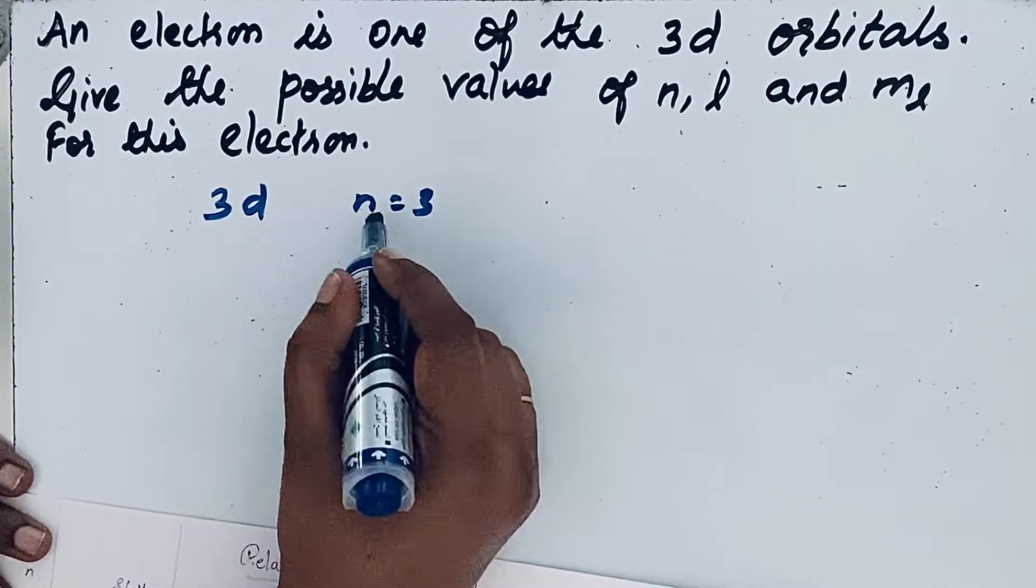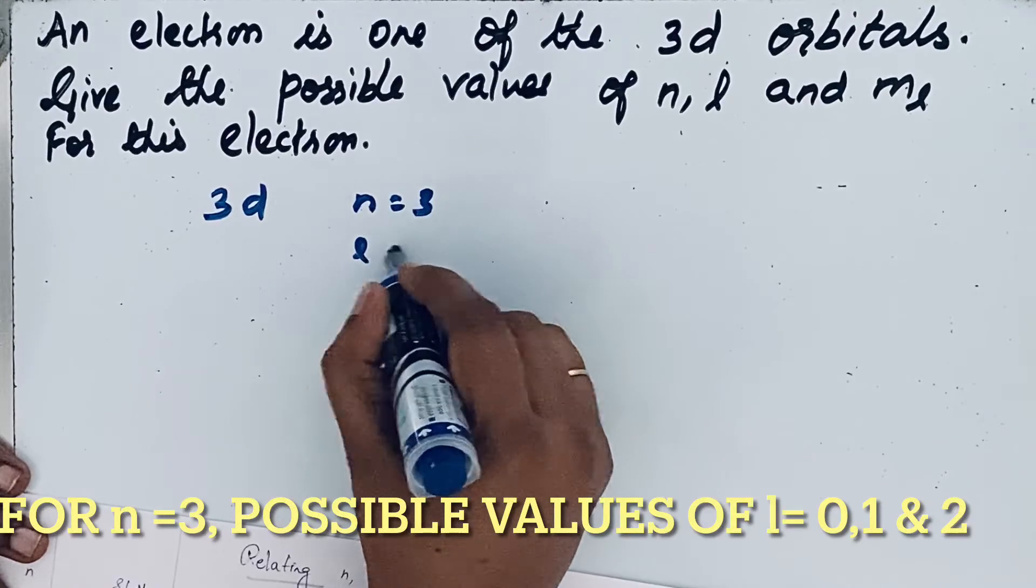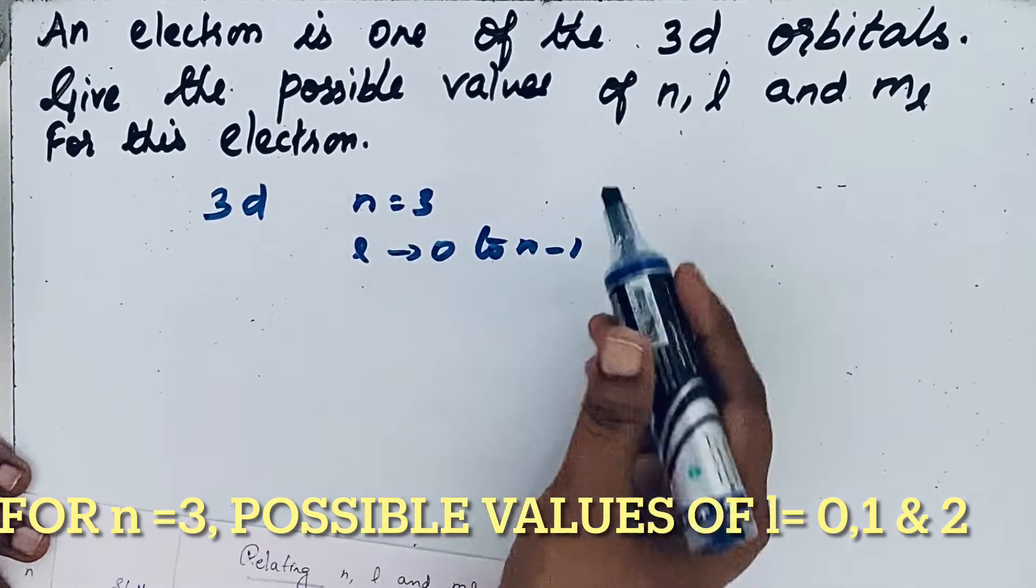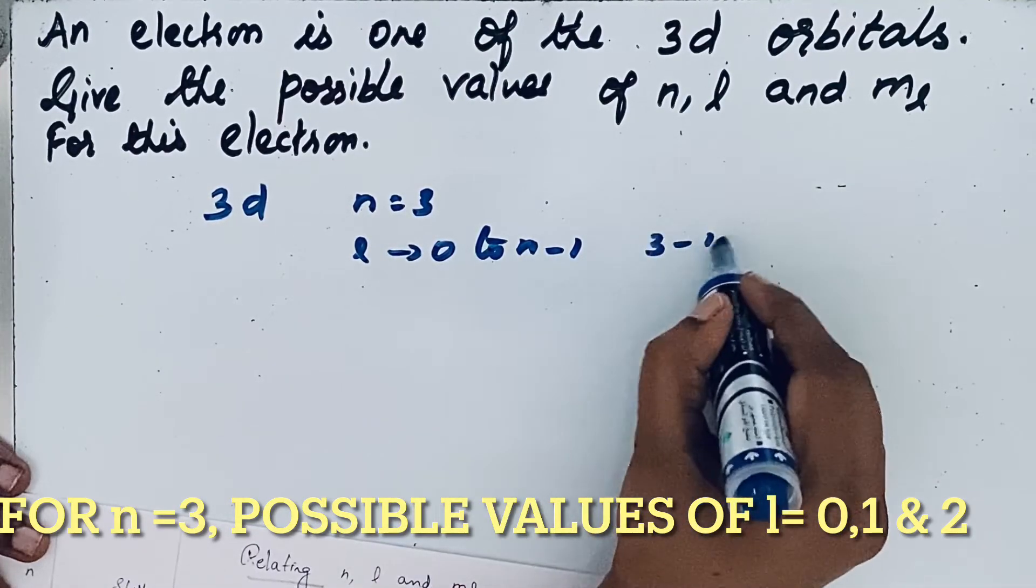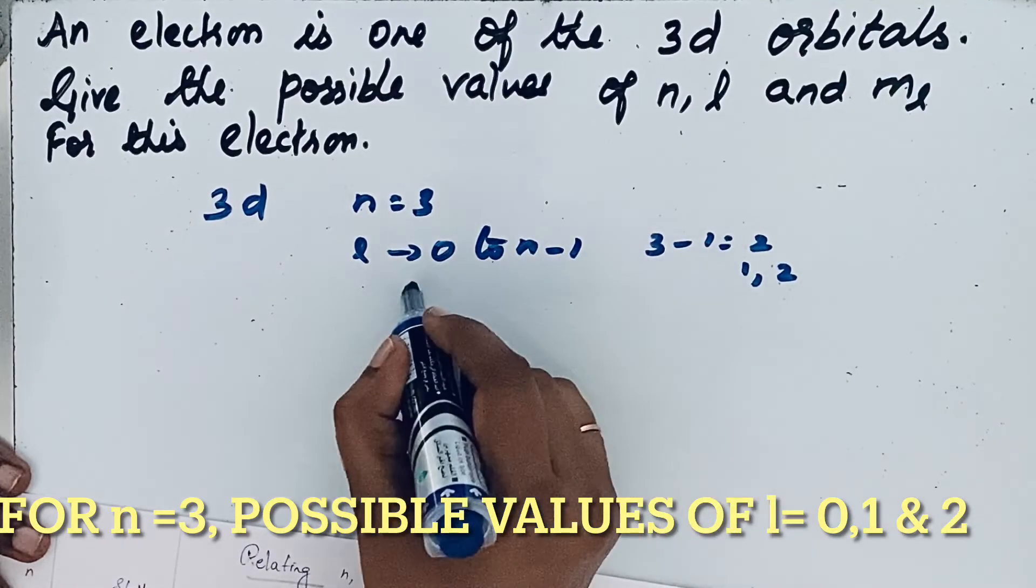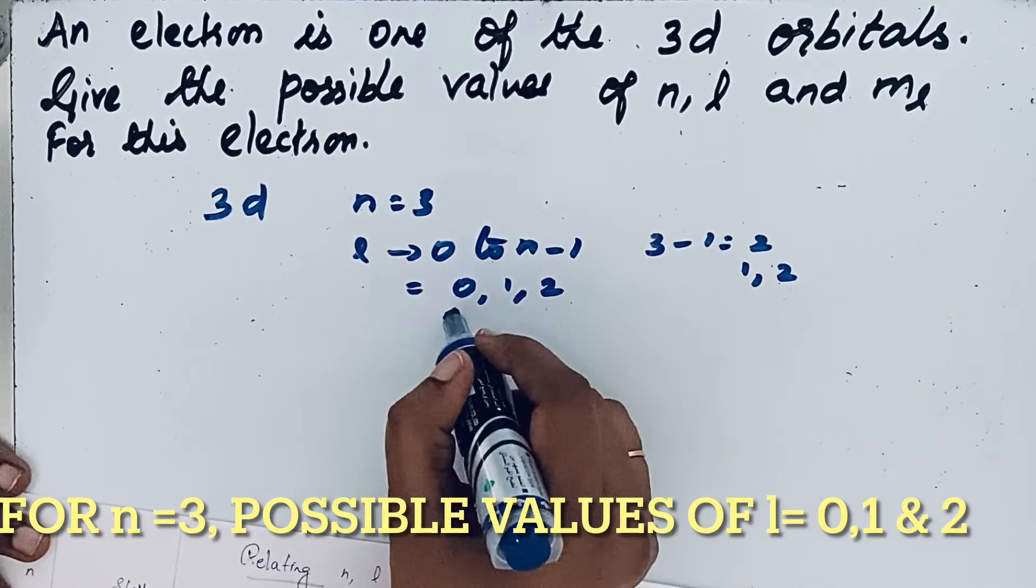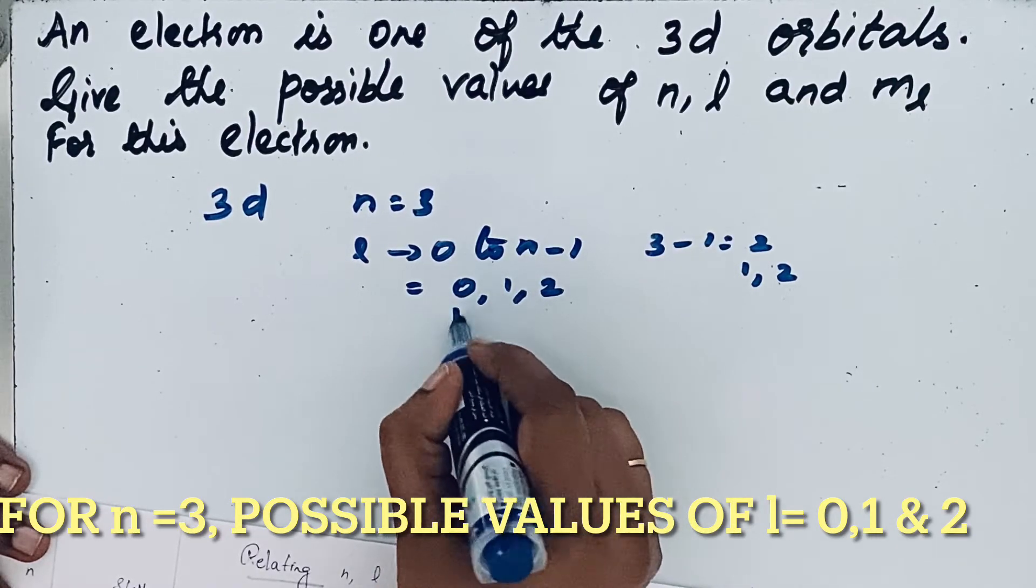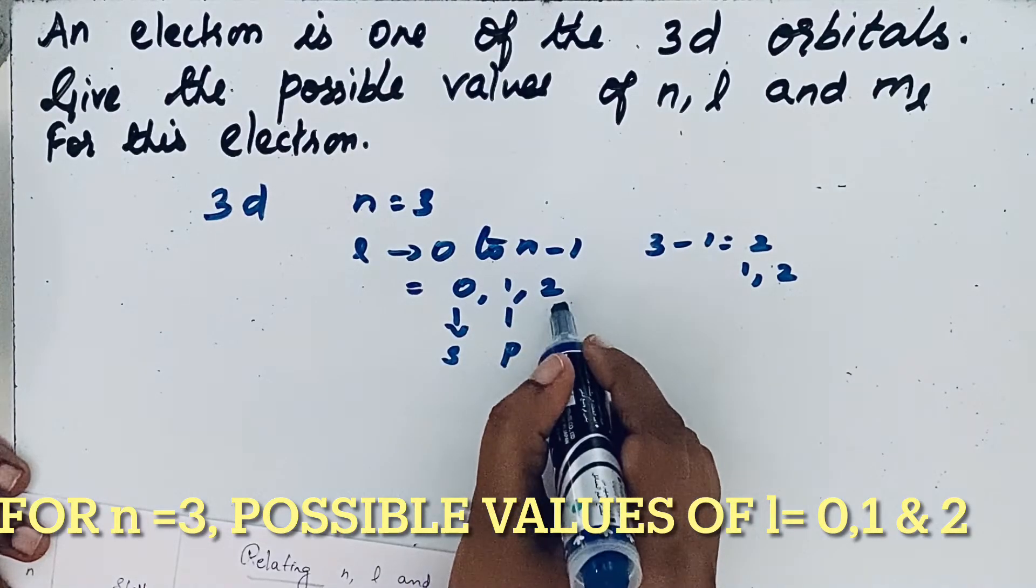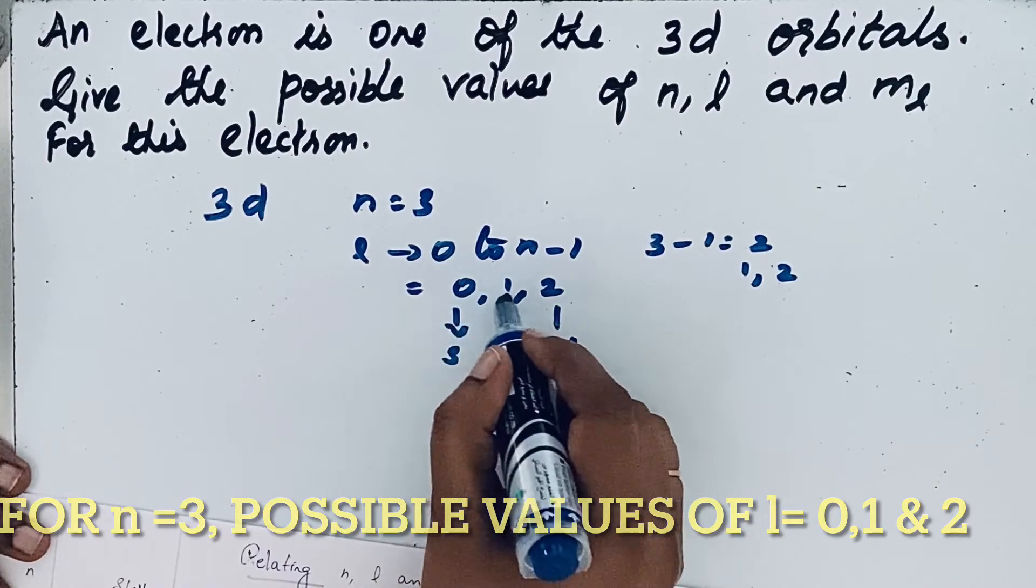There is a relation for n and l. For n value, l equals 0 to n minus 1. So here n equals 3, so 3 minus 1 equals 2. So we can write 0, then 1, then 2. So l equals 0 means s orbital, then for 1 p orbital, and for 2 d orbitals.